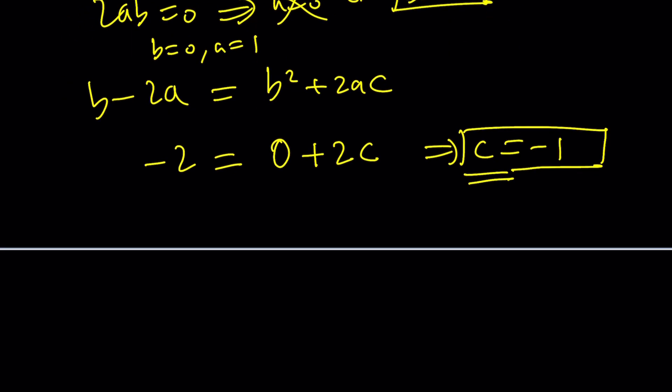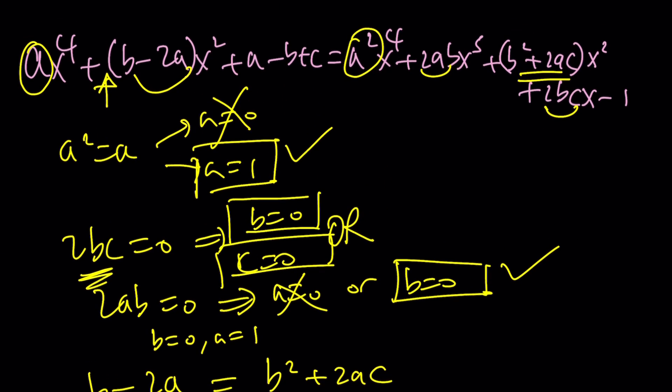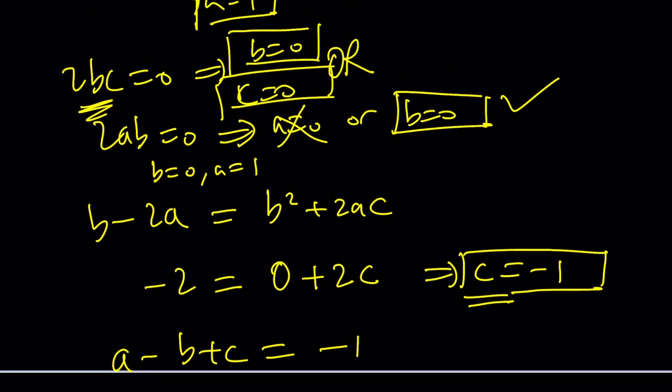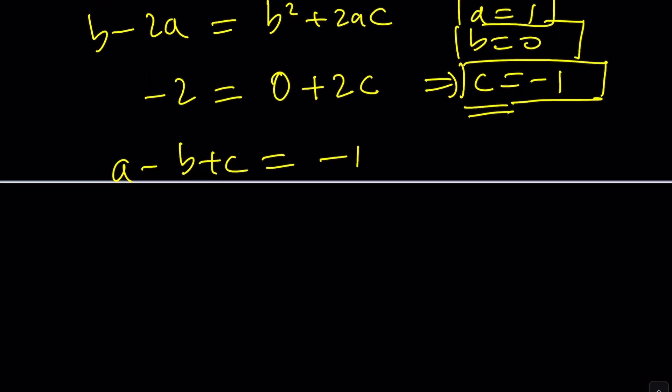c equals negative 1, but we still need to check one more thing. Oh man, this is too much. The constant terms. So a minus b plus c must equal negative 1. Let's see if it's satisfied with all these values. a equals 1, b equals 0, and c equals negative 1. Is that going to work? Let's check it out. 1 minus 0 minus 1 equals negative 0. Uh-oh, it does not equal to negative 1. Too bad. c equals negative 1 did not work. This system is inconsistent. So there is no quadratic polynomial.